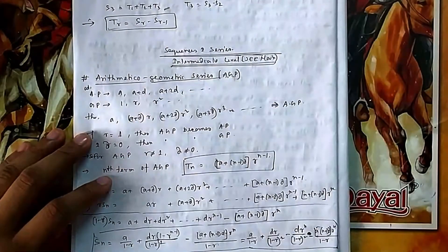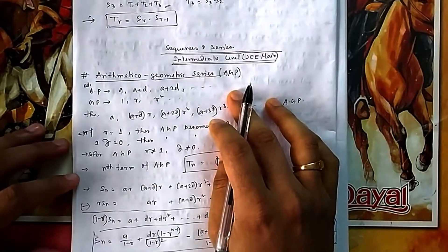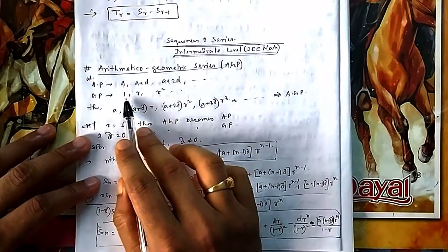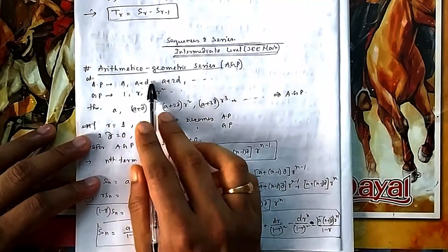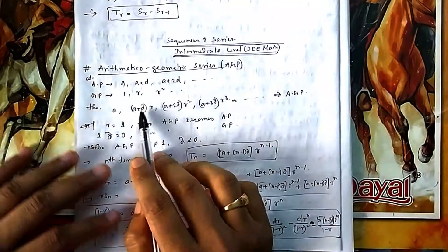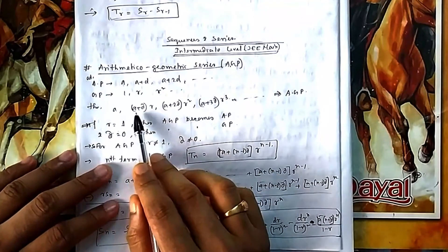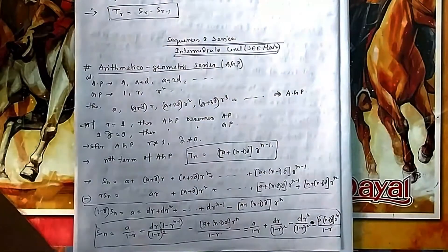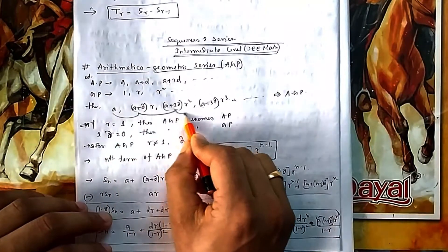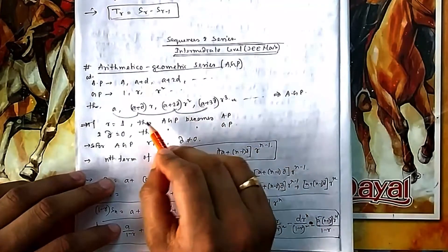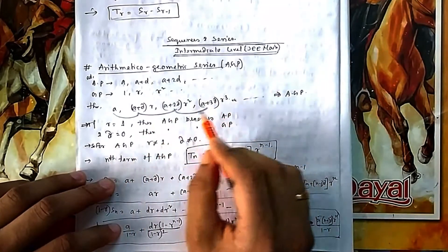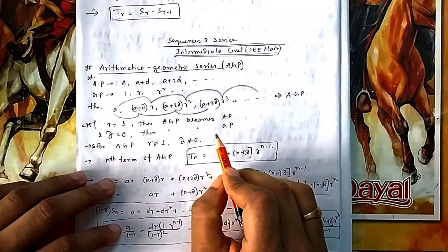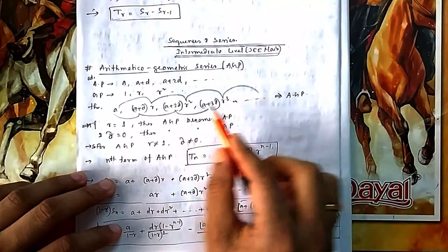The topic is arithmetico-geometric series, that is AGP. Suppose we take an AP: a, a+d, a+2d, and a GP: 1, r, r². Now if you get a series of the form a, (a+d)r, (a+2d)r², (a+3d)r³, one part forms an AP and the other part forms a GP. That is known as AGP.